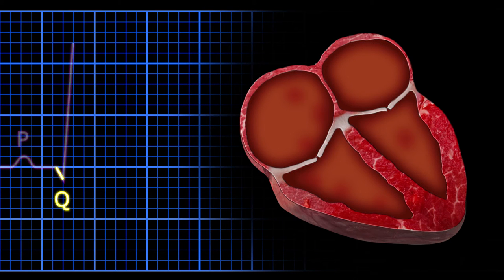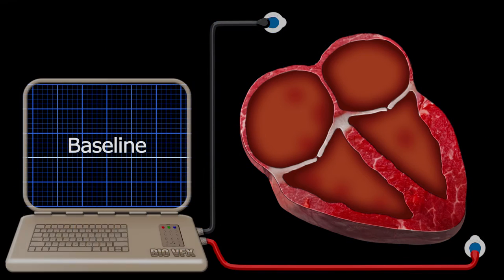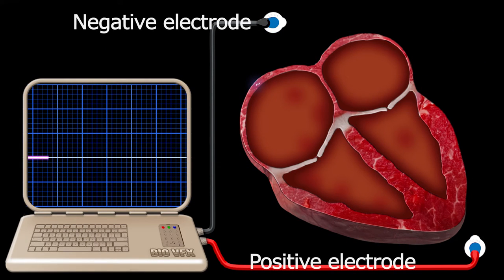The Q wave is a small downward deflection from the ventricular septum. The reason it dips down below the baseline is due to the way the ECG interprets the direction of the current passing through the heart.